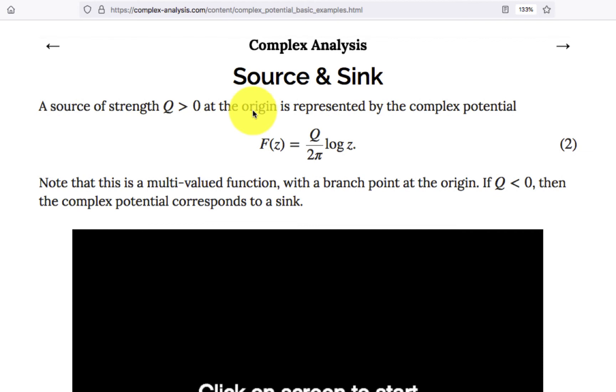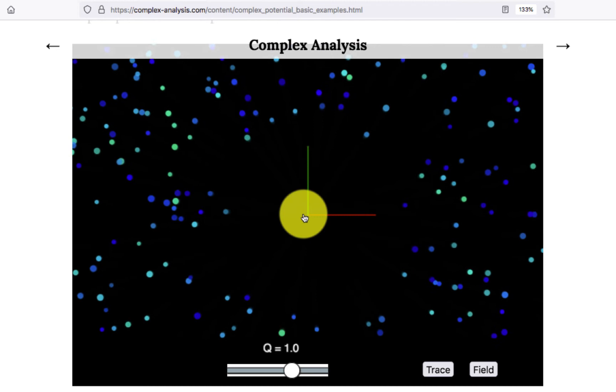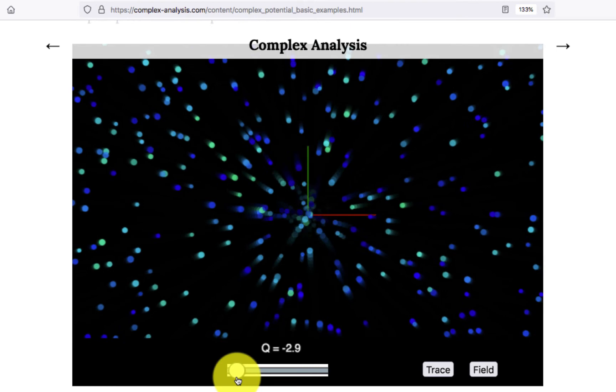Now here's a complex potential that I would call Ω(z) that I didn't consider. A constant times a logarithm. This is a source or a sink. It looks like this. Here's a source. Due to a negative number, it's a sink. It's literally you see everything falls into the sink or things come out of the source.